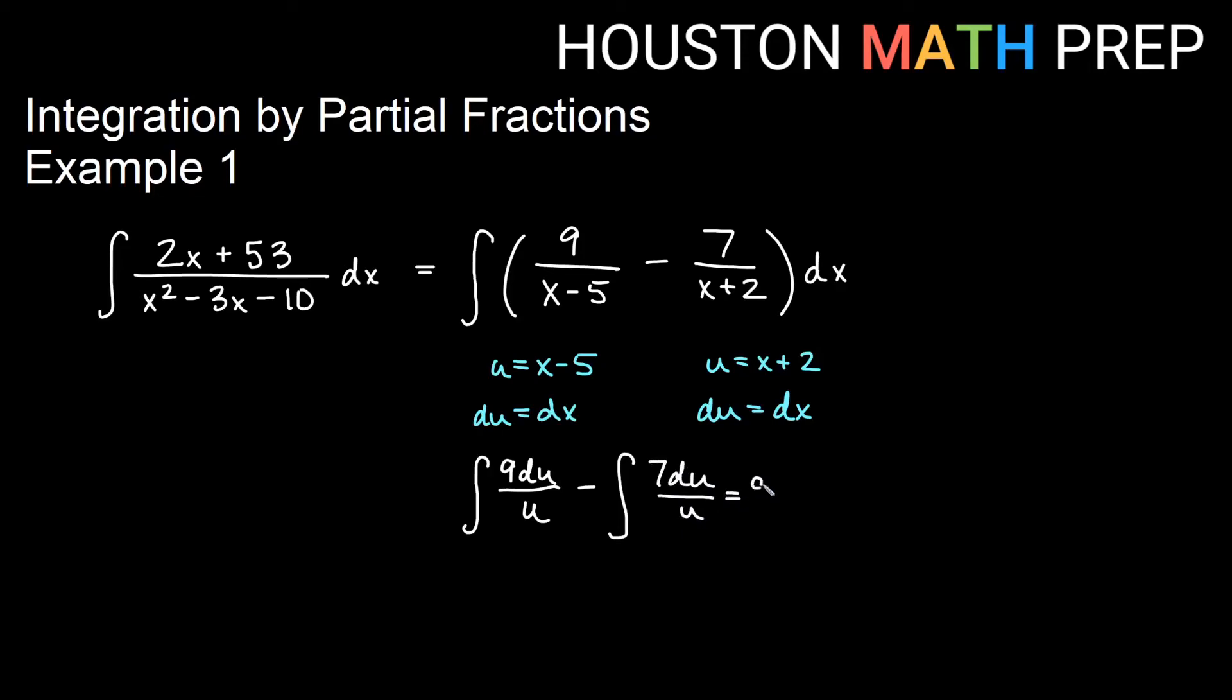For the first one we'll get 9 ln of absolute value of u, which will be ln of absolute value x minus 5, minus 7 ln of absolute value u, which would be x plus 2 for the second one, plus c.